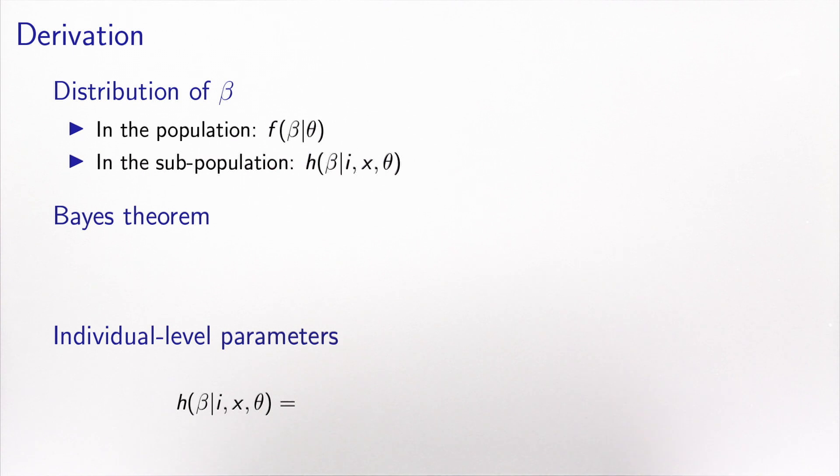So as we have seen, in the population beta is distributed, and the density function that we have assumed is f of beta given theta. Theta being the d-parameters, the mean and the standard deviation of the distribution.